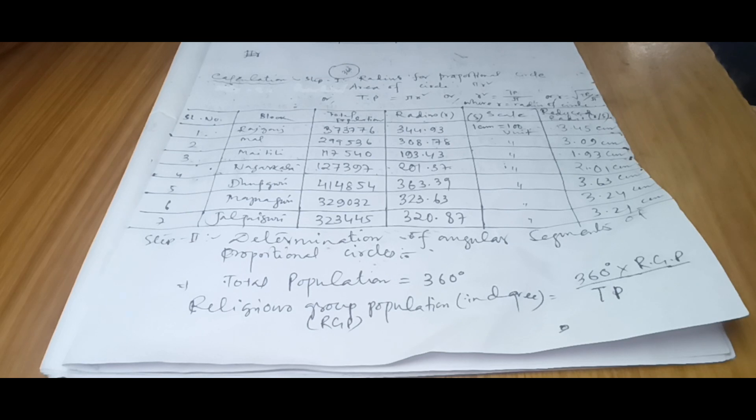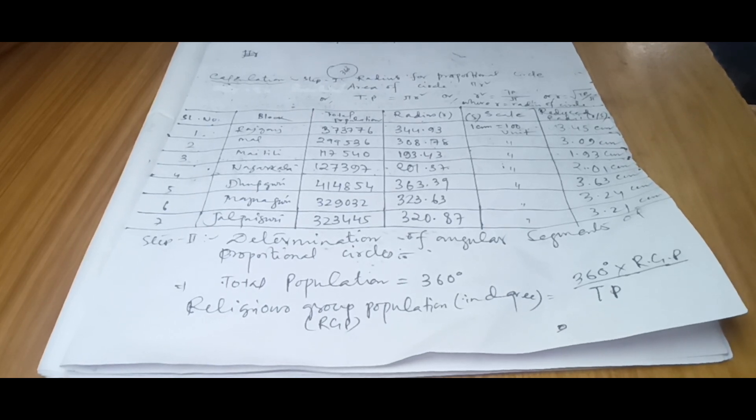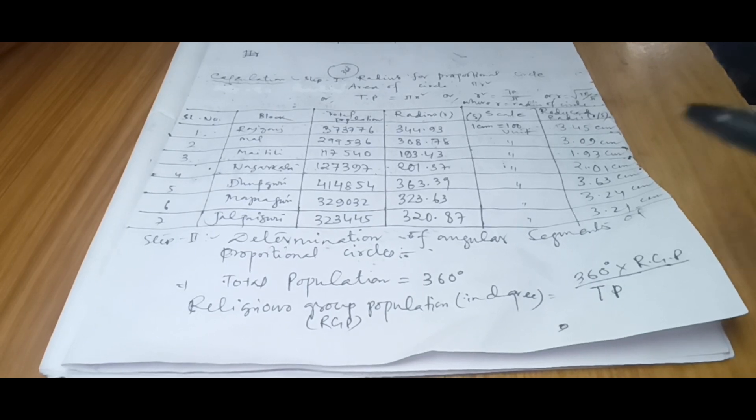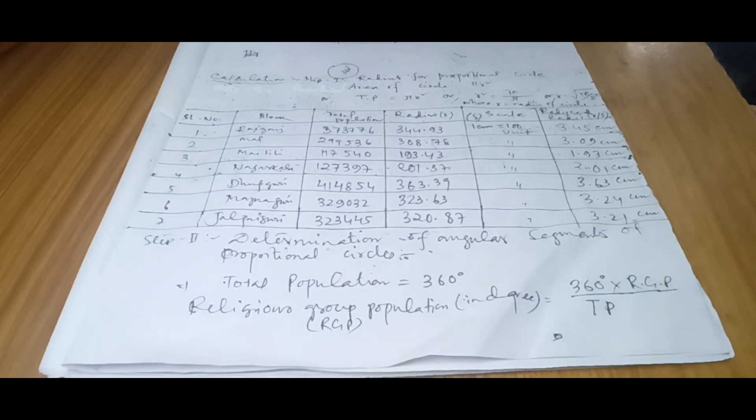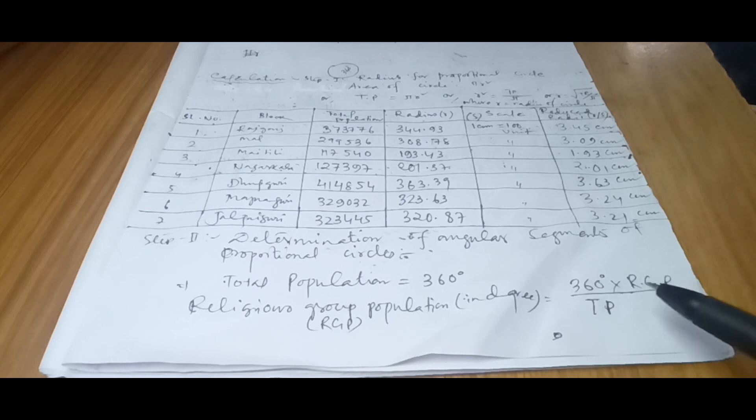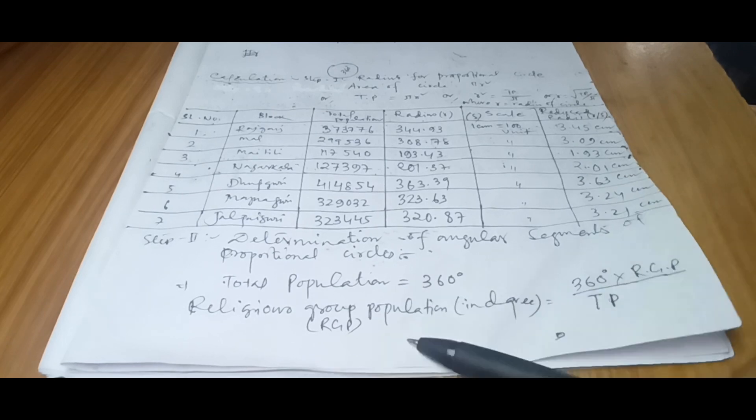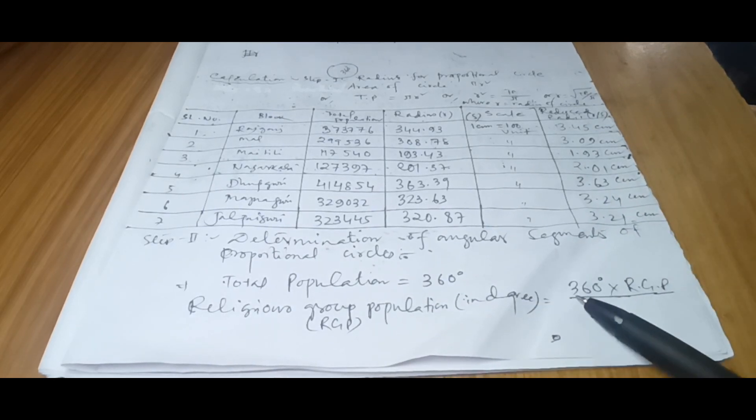After that we will come to the next step—that division: how to draw the divisions? Because radius area we have got, means proportional circle we have got. How to divide this? To divide this, there is a simple formula: Step two, determination of angular segments for proportional circle. We know that total population = 360 degrees. In a circle, this 360 degrees is representing the total population of the particular area or division.